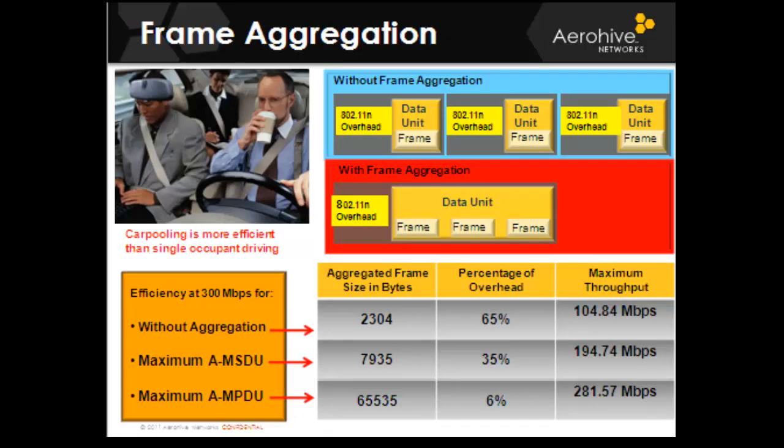Frame aggregation: 802.11n introduces methods of frame aggregation — combining multiple frames into a single frame transmission. The fixed MAC layer overhead is reduced because fewer frames need to be transmitted to get the same volume of data through. The odds of collision are lower, and overhead caused by random back-off timers during medium contention is minimized. This is much like driving in a carpool reduces the amount of traffic on the road.